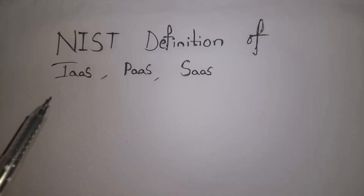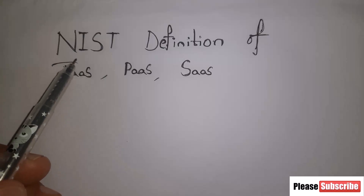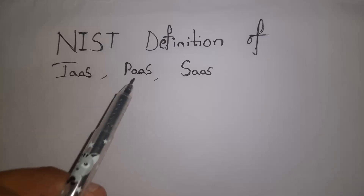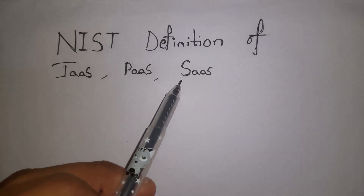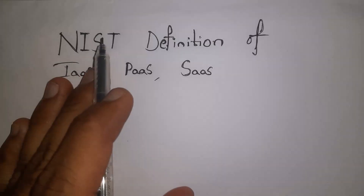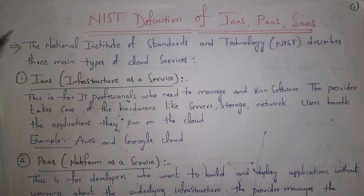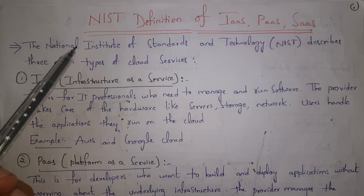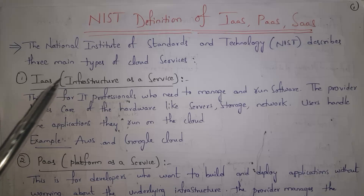Hi guys, welcome to my channel. In this video I will be covering the NIST definition of IaaS, PaaS, and SaaS. I have uploaded complete cloud computing subject tutorials and will provide that link in the description. NIST, that is the National Institute of Standards and Technology, describes mainly three types of cloud services: Infrastructure as a Service, Platform as a Service, and Software as a Service.